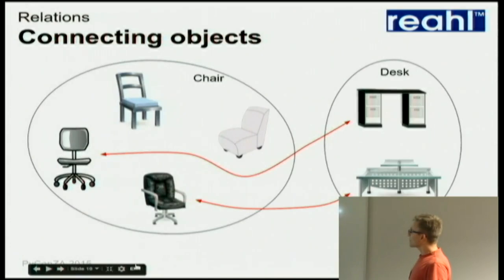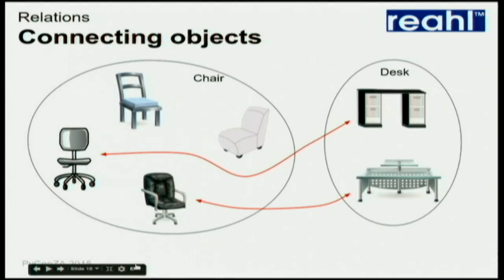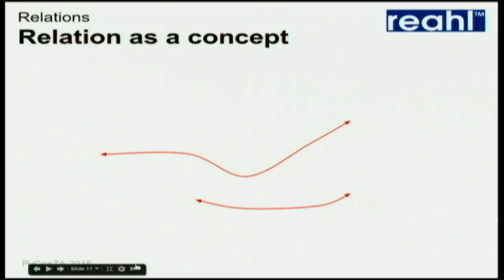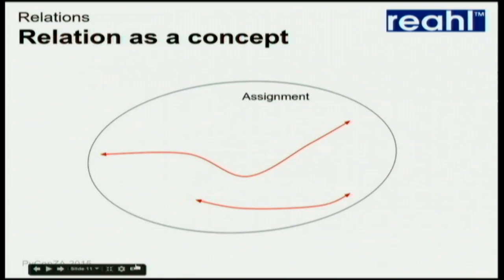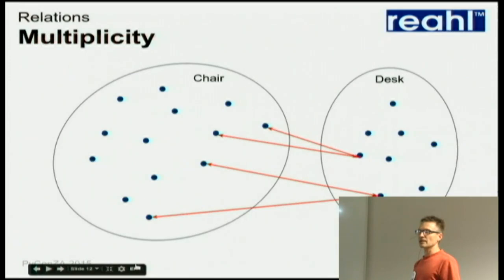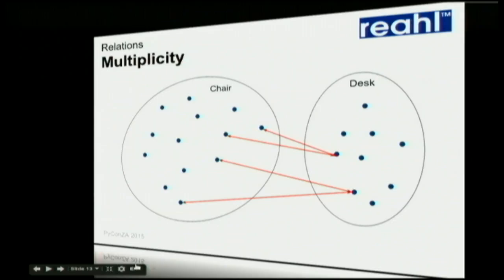The other part is that we can connect objects from one set to another set. We can say, for example, that this particular chair is connected or assigned to that particular desk. And if you take all the other stuff away and you end up just with the connections, those are objects too — so I can call them a set, which means I can call this a different concept: the concept of assignment of desks to chairs. One thing about these relationships that we often like to specify is this idea of multiplicity — chairs can only be assigned to one desk at a time, but a desk can have many chairs assigned to it.